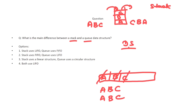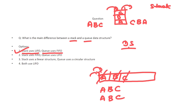Stack uses LIFO: C was the last one in and the first one out — correct. Queue uses FIFO: first input was A and first output is also A — correct. Always read all remaining options in exams. Option 2 says stack uses FIFO — totally wrong. Option 3 says stack uses a linear structure and queue uses a circular structure — no, queue is also a linear structure. Option 4 says both use LIFO — not possible. So the correct answer is option 1: stack uses LIFO, queue uses FIFO.